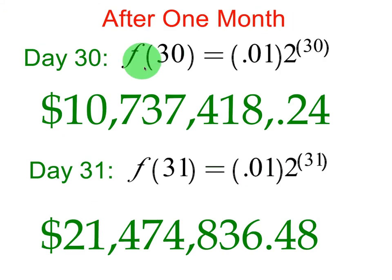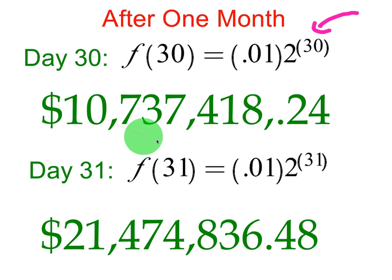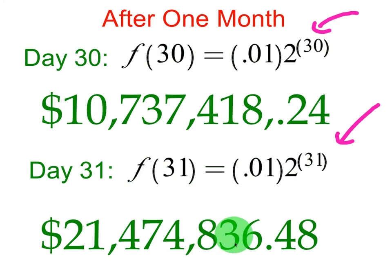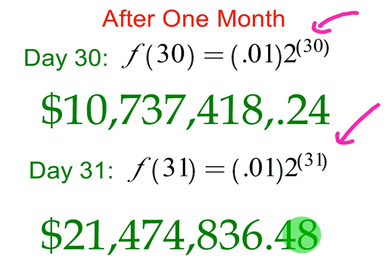After one month, F of 30 — plugging in 30 for T — we still start with a penny and double it 30 times. If you plug this into your calculator, you will get a whopping $10,737,418.24 paid to you on the 30th day. If there are 31 days in the month and you plug in 31 for time, you end up with $21,474,836.48. So the mere fact of doubling a penny a day for 31 days will earn you over $21 million.